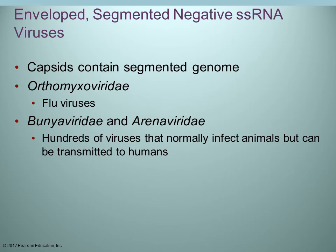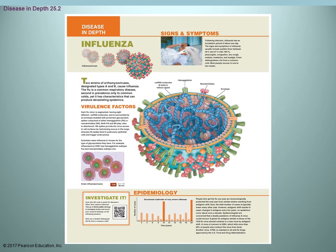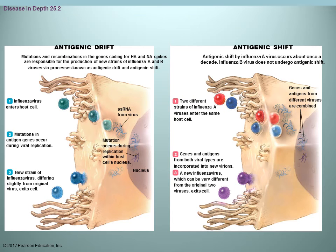Orthomyxoviridae includes the flu viruses, and there are also bunyaviridae and reoviridae, which normally infect animals but some can be transmitted to humans. The flu virus, or influenza, has type A and type B. The envelope has different glycoproteins important for attachment — two different types — and mutations of these create new strains, designated by letter combinations. We have what we call antigenic drift and antigenic shift.